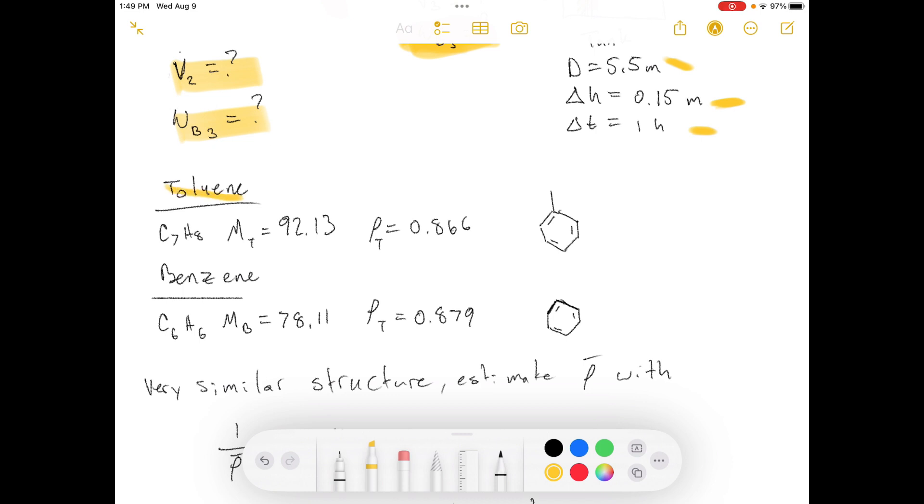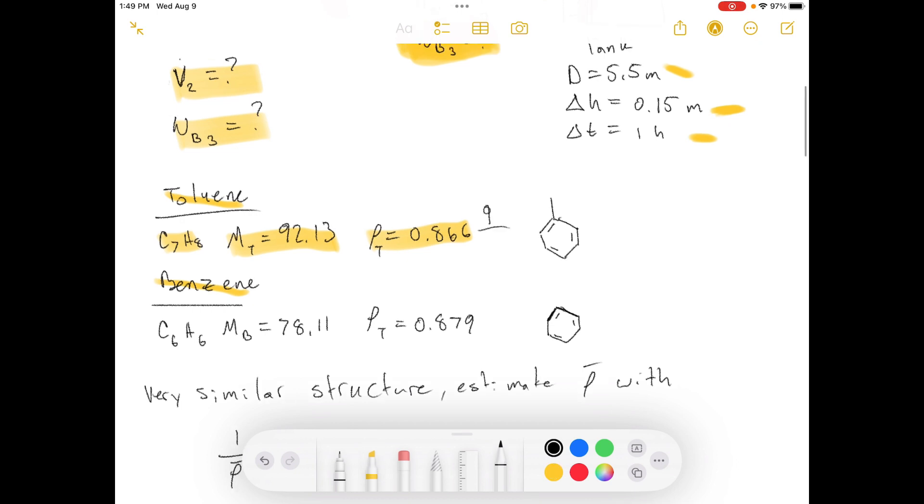Let's get some of our component information. So, we've got toluene here, our molar mass, and our density. That is in grams per centimeter cubed. Then this is what toluene looks like. It looks like a benzene ring with one little carbon attachment onto the end. Then we've got this is our benzene information. This is our benzene ring. So, these you can see are very similar.